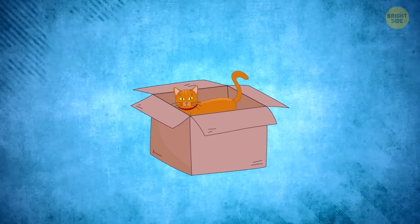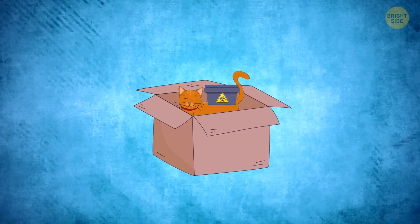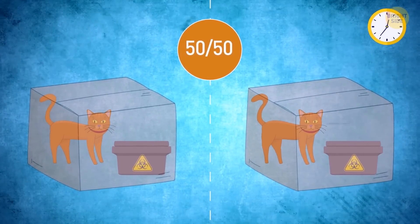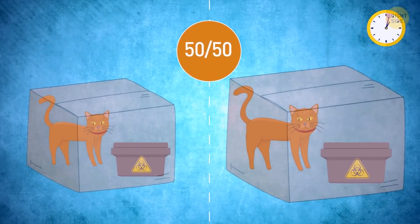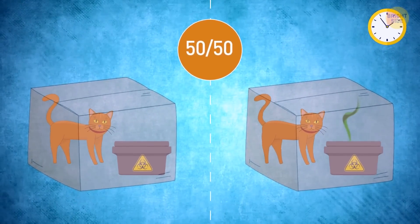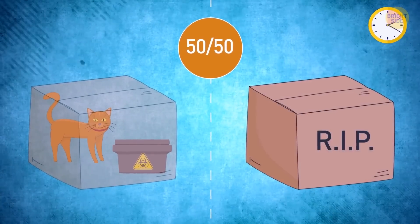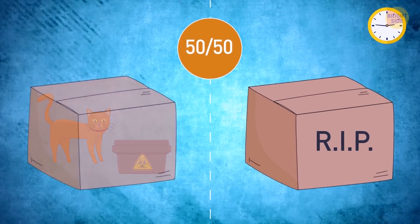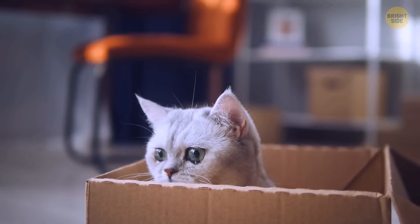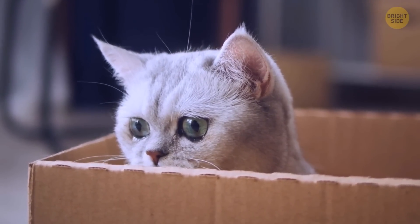First of all, we have a box and a cat. In the box, there's a container with toxic gas and a special mechanism. Every hour, there's a 50% chance that this mechanism will either open the gas container or not. If it happens, the poisonous gas will be released and the poor cat won't make it. If this doesn't happen, the cat will remain alive and well. Don't worry, this was a purely hypothetical experiment. No cats were harmed in the process.